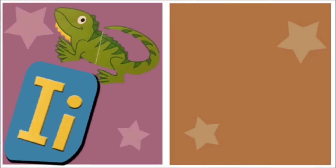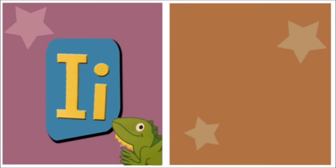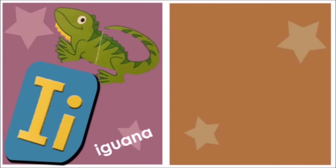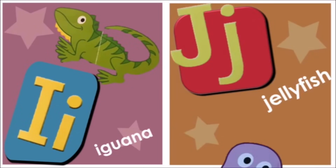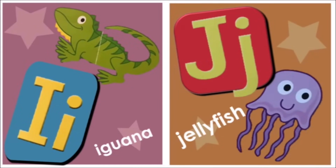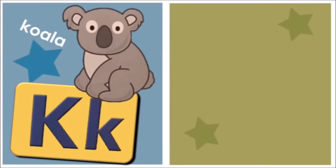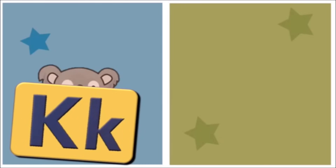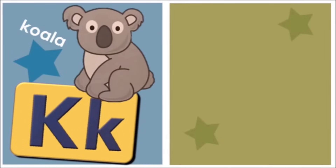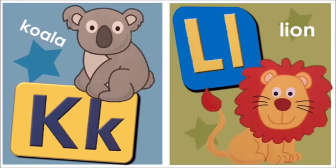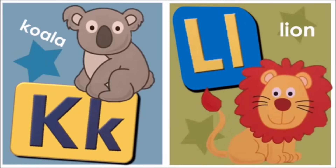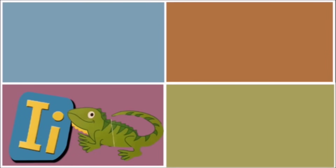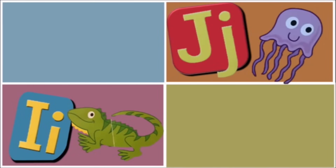I for Iguana. J for Jellyfish. K for Koala. L for Lion. These are the words from the alphabets.